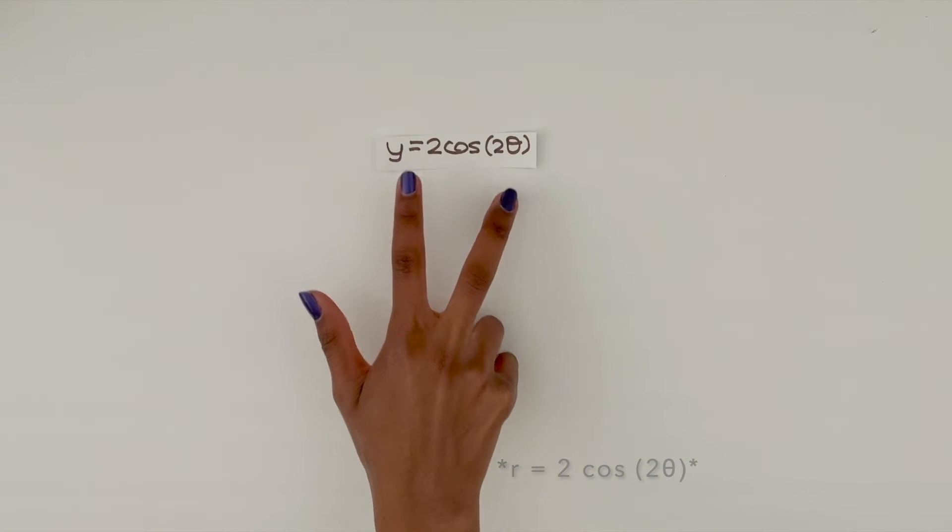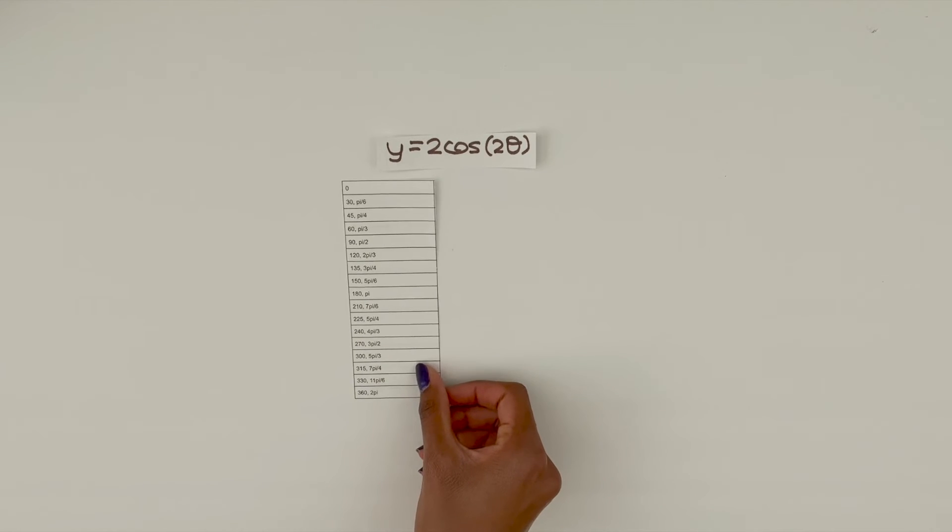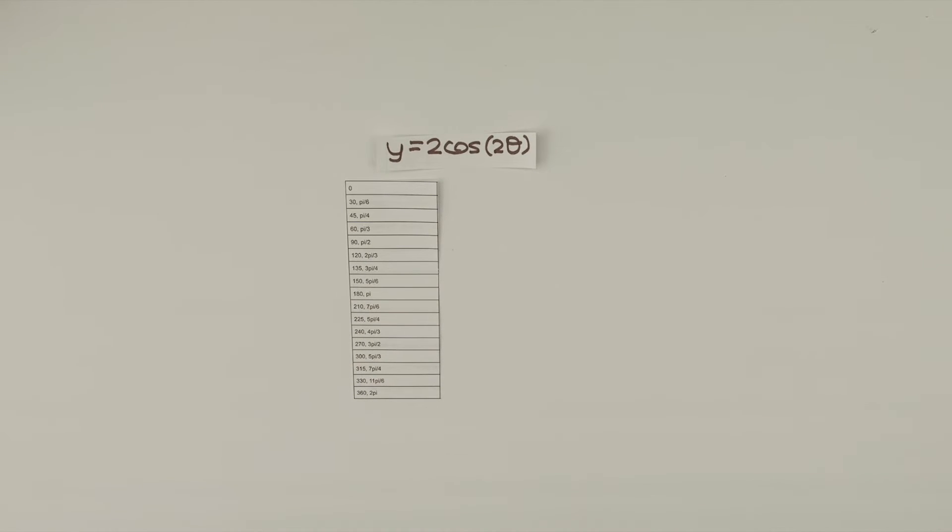Let's first make a table that includes all the values of r based on theta over the domain of 0 to 2π. You do not have to do this every time you graph, but since it's our first one, let's write everything out.